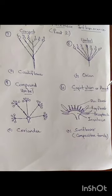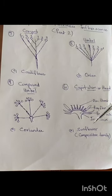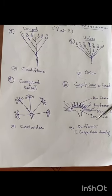The next is the capitulum and head. The capitulum and head is called the sunflower. It is called the composite family.